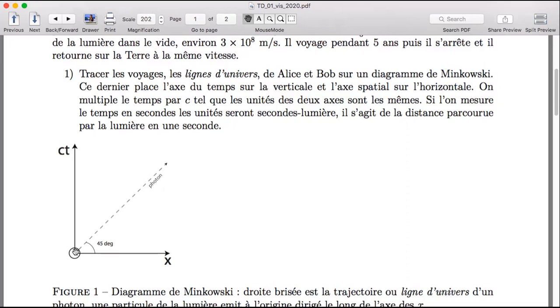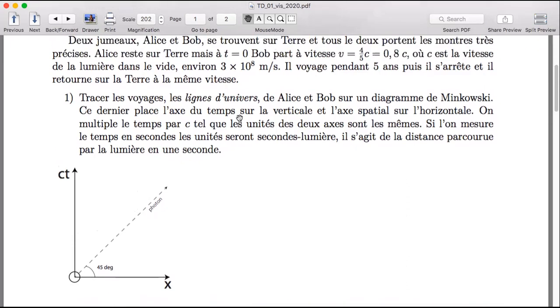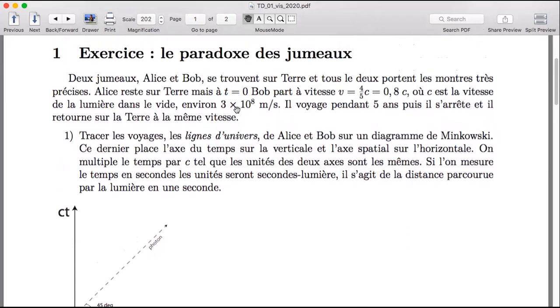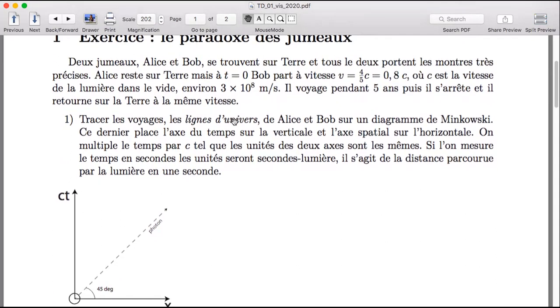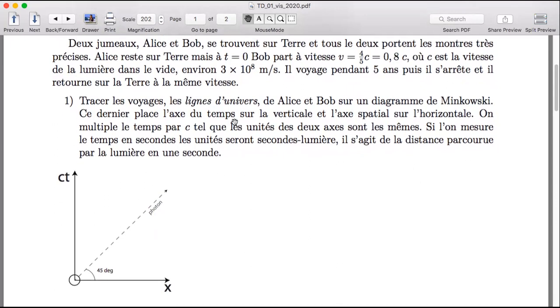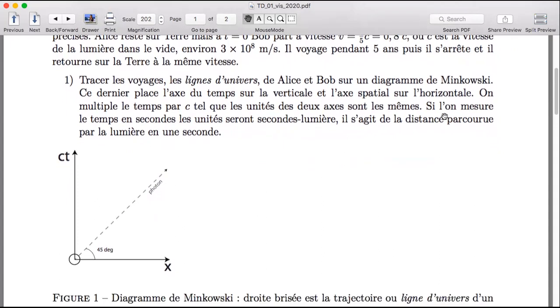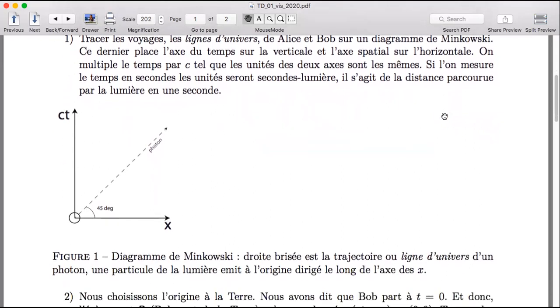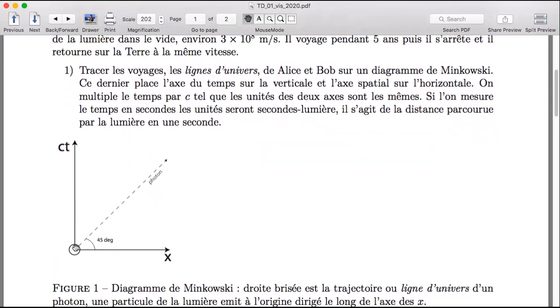And now in this diagram the vertical line CT corresponds to X equals zero, right? It's just the origin. Yes. And so the earth we're fixing the origin at the earth. I was hoping that was clear, even if I didn't say it.